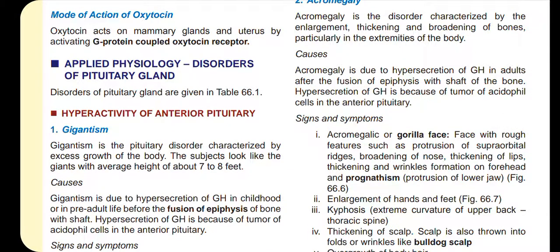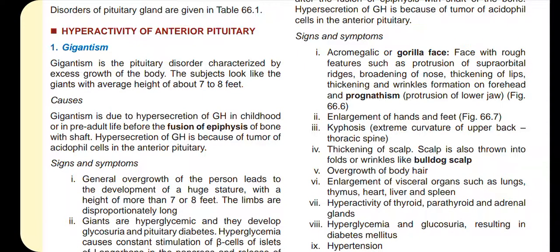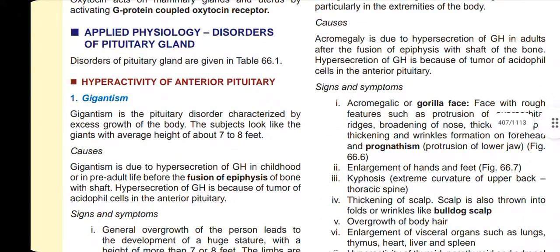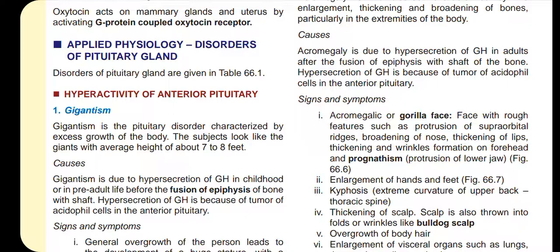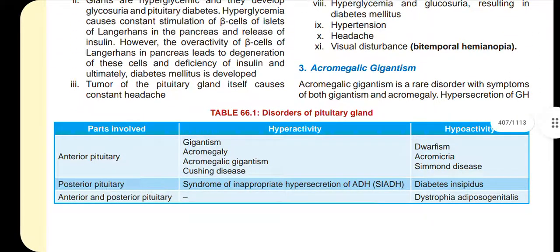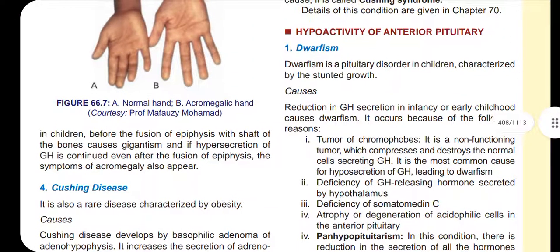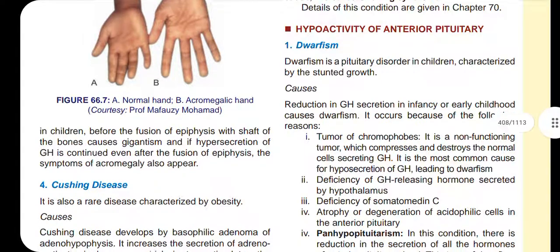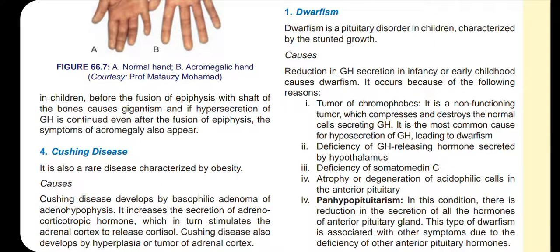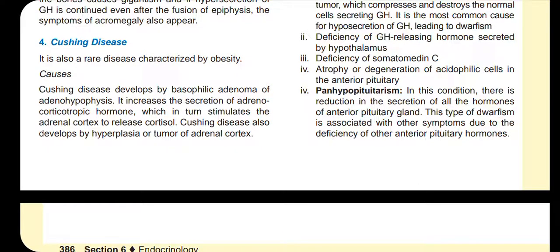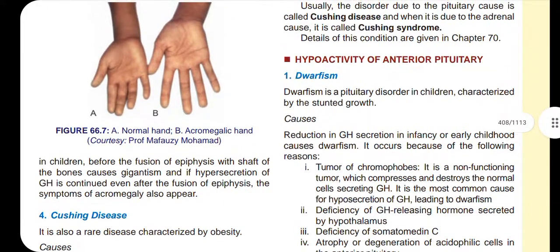Regarding hypersecretion disorders: hypersecretion of growth hormone before the fusion of epiphysis is called gigantism. Hypersecretion after epiphyseal fusion is called acromegaly. This is a rare disorder. Cushing disease is an adeno-hypophysis disease caused by increased adrenocorticotropic hormone, which leads to increased growth risk.